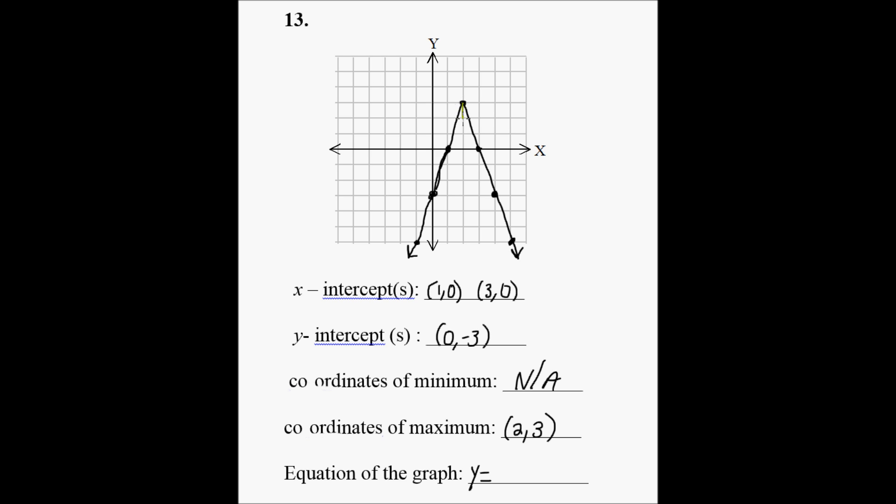We're going to go down 1, 2, 3, and right 1. So that's down 3, right 1, which is negative 3 over 1 or just negative 3.